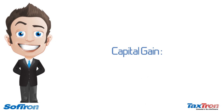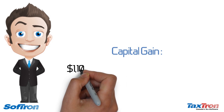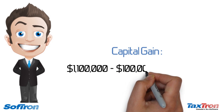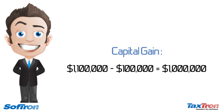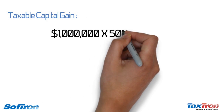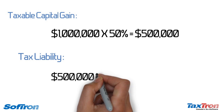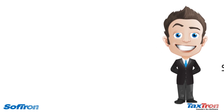In the first scenario, Charles bought real property for $100,000 in 2001 and sold it for $1.1 million last year, thereby generating a capital gain of $1 million. His taxable capital gain will be $500,000. Assuming a tax rate of 50%, he will have a tax liability of $250,000.